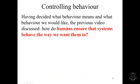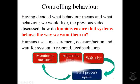Controlling behaviour then. Having decided what behaviour means and what behaviour we would like, the previous video discussed how humans ensure that systems behave the way we want them to. Humans tend to use a measurement, decision, action and wait for the system to respond sort of feedback loop. That was demonstrated in the previous video, and we showed that it tends to be quite effective.